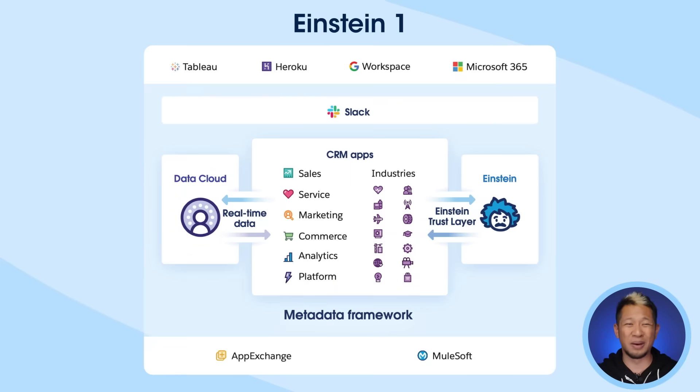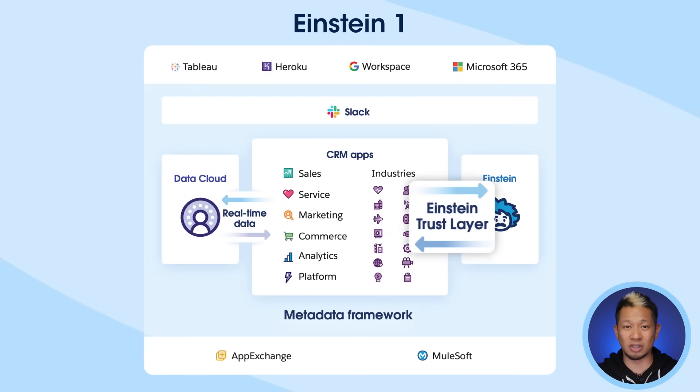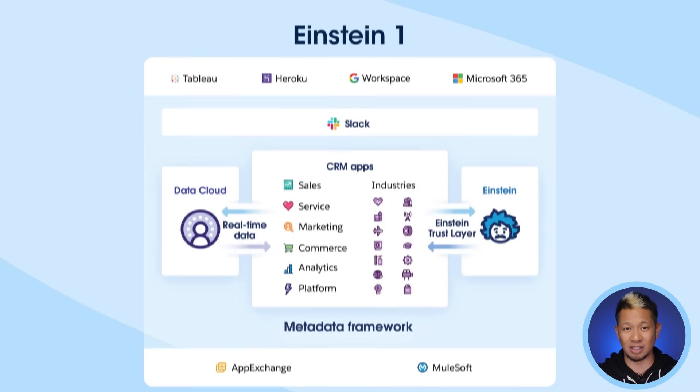When Einstein Copilot does these otherwise time-consuming tasks for employees, it makes them more productive and frees up time that they can use to serve more customers more effectively. But the most important thing about Einstein AI is that it doesn't put your sensitive data at risk, because it has enterprise-level data privacy.